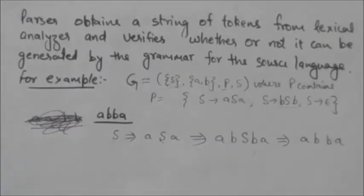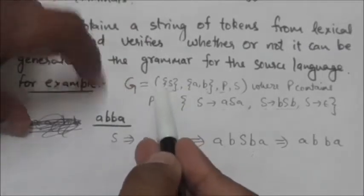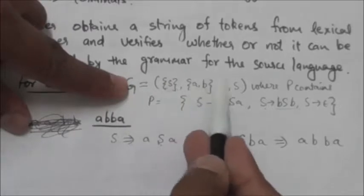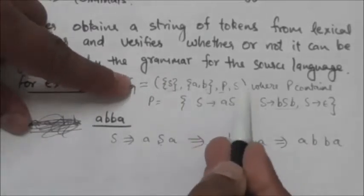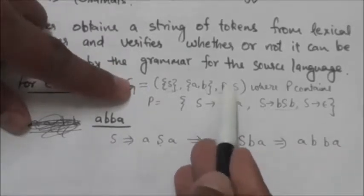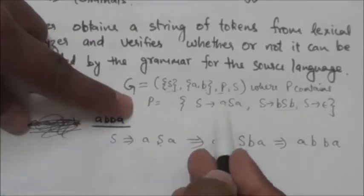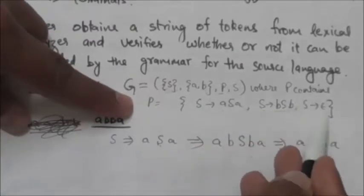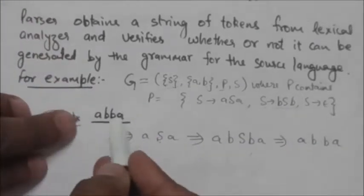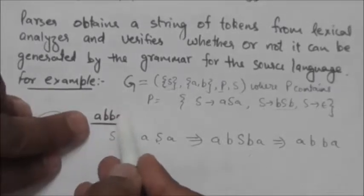Now consider this grammar G. It has a set of non-terminals containing only one non-terminal S, two terminal symbols a and b, start symbol S, and a set of production rules P containing: S derives aSa, S derives bSb, and S derives empty string. We have to perform the syntax analysis of this string of terminals: a b b a.